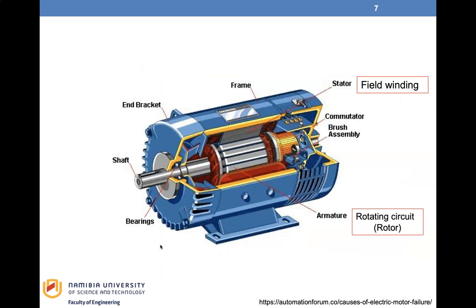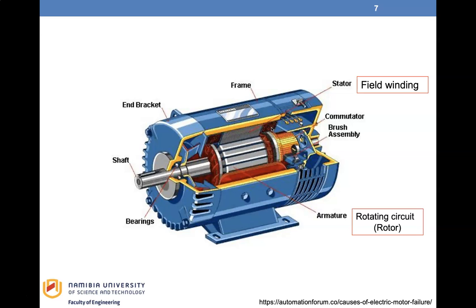Looking at the motor structure: the rotating part is called the armature, which is made of inductance and resistors. Then you have the stator, which provides the static field or field winding and creates the flux or electromagnetic field that allows current being passed to generate the force.